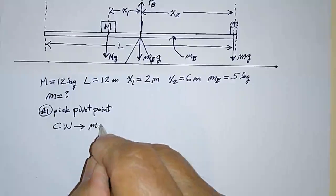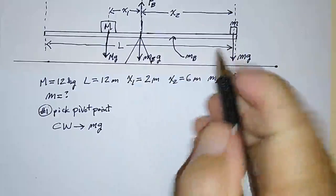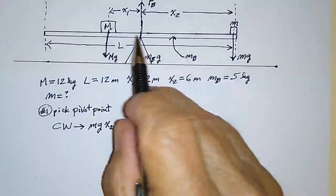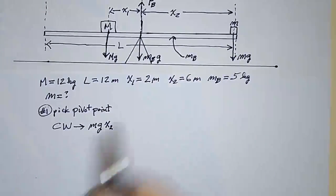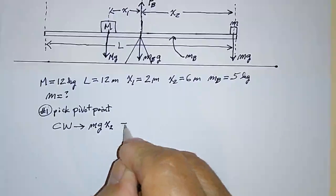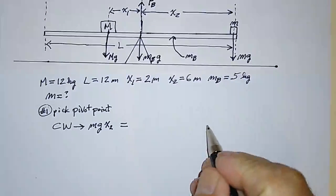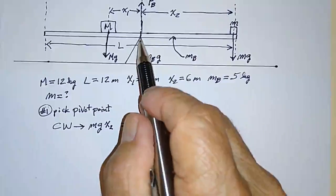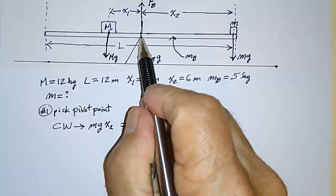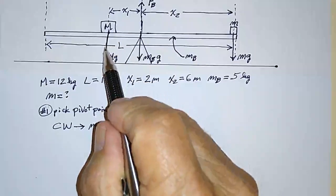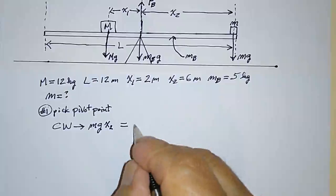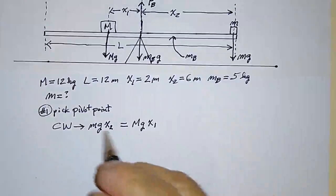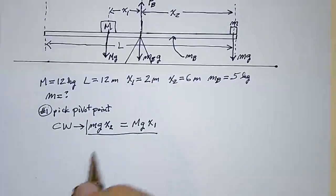What are the clockwise torques? Really there's only one — the torque due to the little mass. So I write: the force mg times the distance x2 equals the clockwise torque. Nothing else is making it go clockwise. The counterclockwise torques — which must be equal — come from the big mass M, which is trying to make the whole thing rotate counterclockwise. That equals Mg times x1.